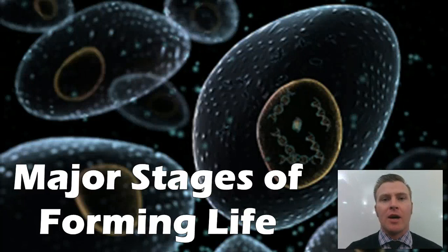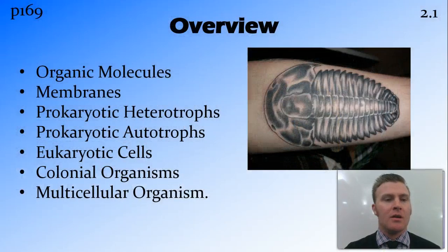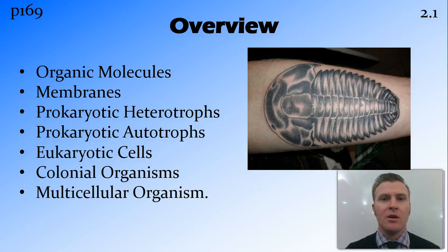In this video we're going to look at the major stages in the formation of life. We started with organic molecules, then formed membranes, then the first prokaryotic heterotrophs, then prokaryotic autotrophs, before eukaryotic cells, colonial organisms, and finally multicellular organisms.